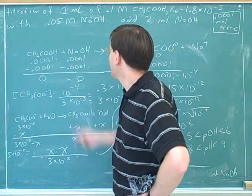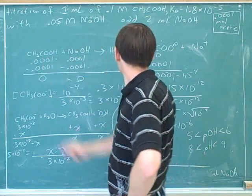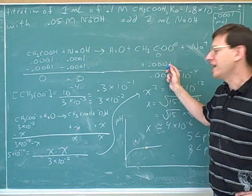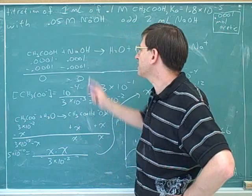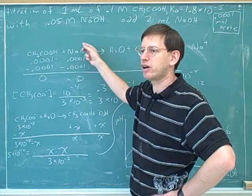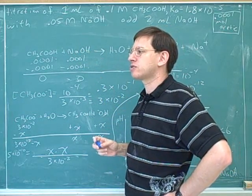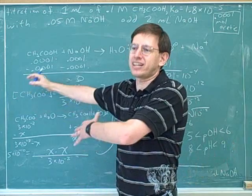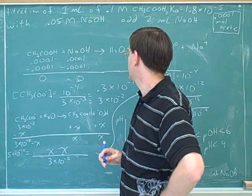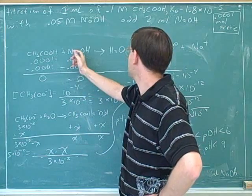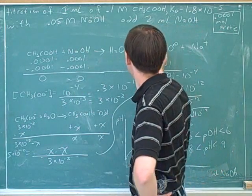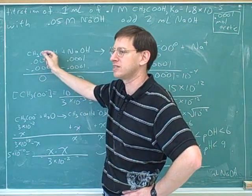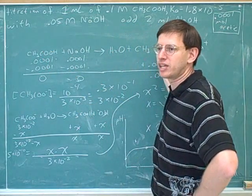At first you might think, since I've added as much acid as base, why shouldn't we just be neutral? Well, it's true we've added as much acid and base, but that turns all of our acid into its weak conjugate base. And then that weak conjugate base makes the solution somewhat basic. This wouldn't have happened if we were just dealing with strong acids and strong bases, because strong acids and strong bases have conjugates that are unreactive.